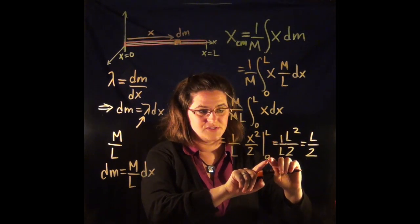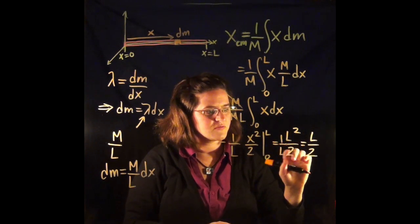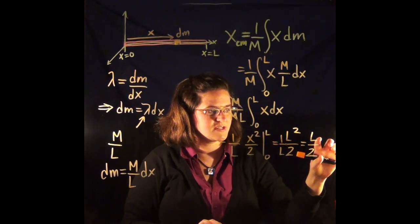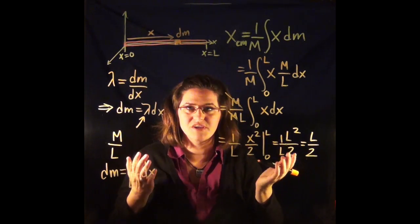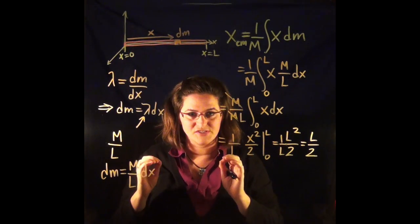I evaluated it from 0 to L, this result of the integral. And I got L squared over 2 multiplied by the original 1 over L. And I cancelled out the mass. And now I've got L over 2. And that's what we expected for our center of mass of a uniformly mass distributed rod.